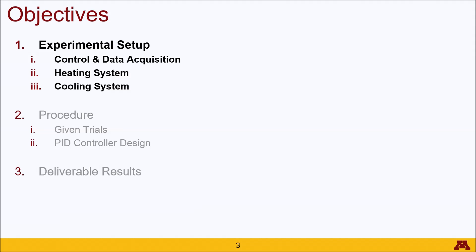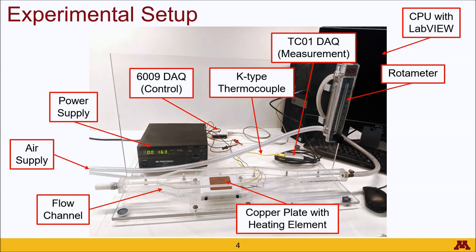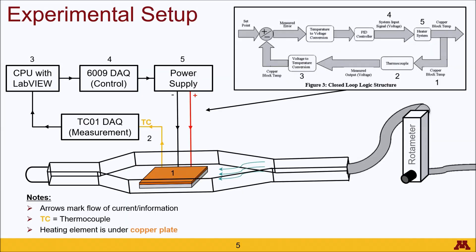We'll start out with the experimental setup. Here's what you'll see when you get into the lab, and here is a cleaned up version through an electronic schematic. This experiment follows the closed-loop PID control system. The numbers indicate the order in which the pattern operates, and they are shown also in the experimental setup, where number one starts with the copper plate, which the thermocouple in part two takes the temperature measurement of.